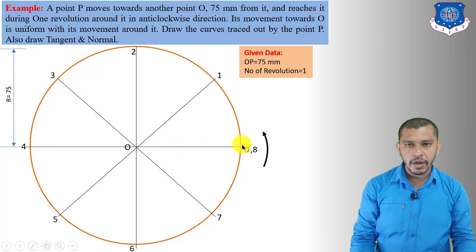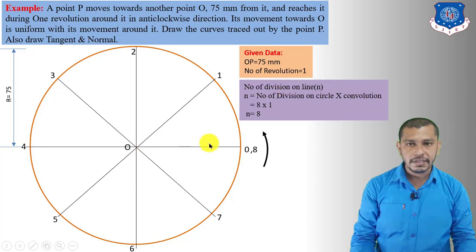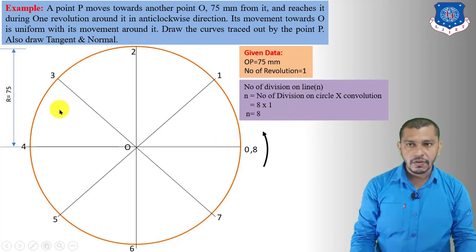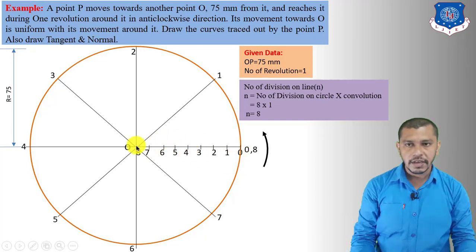Now we have to divide the distance from O to the starting point into equal number of divisions. The equation is: number of divisions on this line equals the number of divisions on the circle multiplied by the convolutions. The number of divisions on the circle is 8, and convolution is 1, so the number of divisions on this line will be 8. Divide this line into eight equal parts, numbered 0 through 8 up to the center.